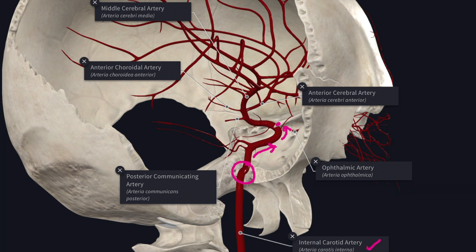Now it turns backwards and then upwards to come to lie lateral to the optic chiasma, just underneath the anterior perforated substance of the brain.